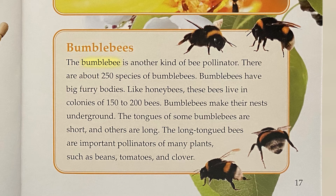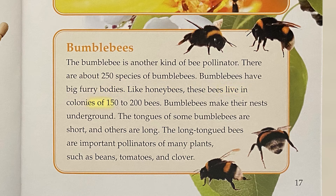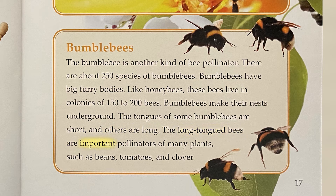Bumblebees: The bumblebee is another kind of bee pollinator. There are about 250 species of bumblebees. Bumblebees have big furry bodies. Like honeybees, these bees live in colonies of 150 to 200 bees. Bumblebees make their nests underground. The tongues of some bumblebees are short, and others are long. The long-tongued bees are important pollinators of many plants, such as beans, tomatoes, and clover.